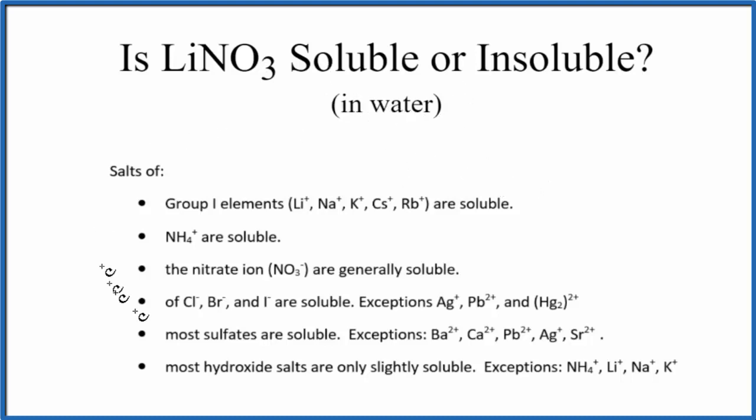One way is to look at the solubility rules, a set of rules that we memorize. As we look down, it says Group 1 elements - those are elements in Group 1 on the periodic table, like the lithium ion here. Group 1 elements are soluble, so we expect this to be a soluble compound.